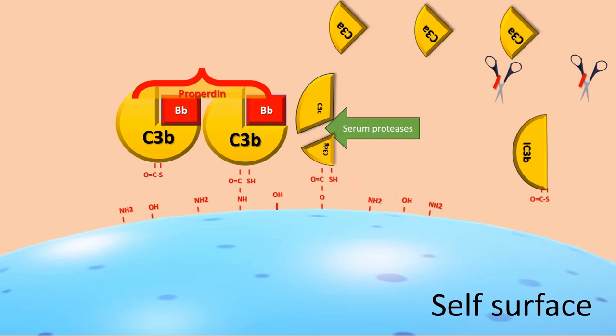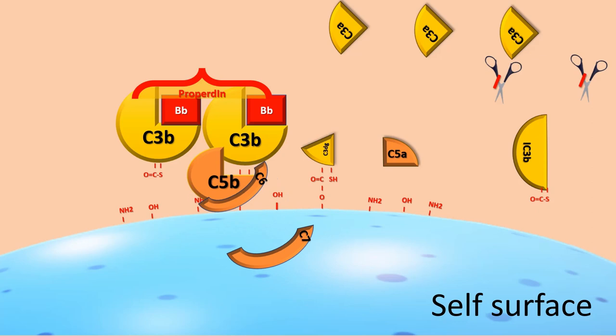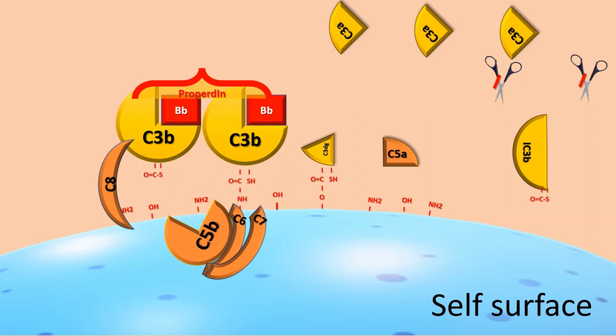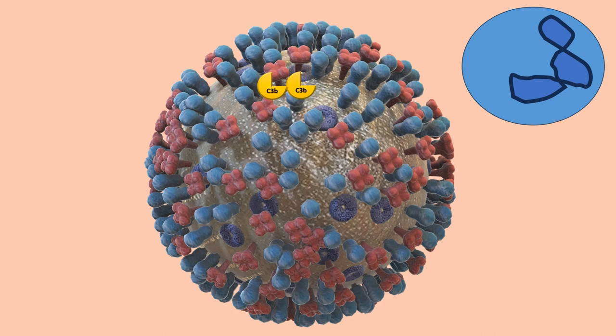C3A and C5A, the anaphylatoxins, are degraded by plasma carboxypeptidases. The formation of membrane attack complex is inhibited by vitronectin or S-protein, a soluble mediator, which impedes the binding of C5BC6C7 to the membrane and by CD59 which blocks the binding of C9 to the C5B678 complex attached to the membrane, dislocating it.